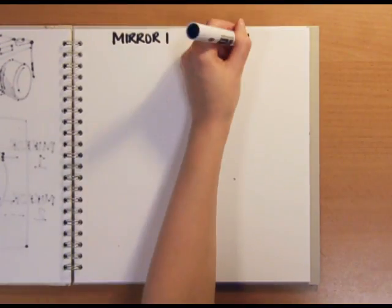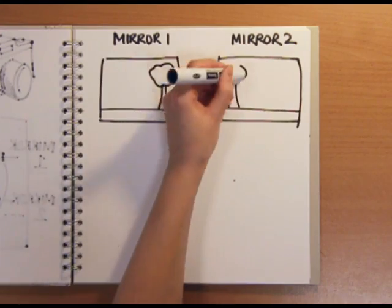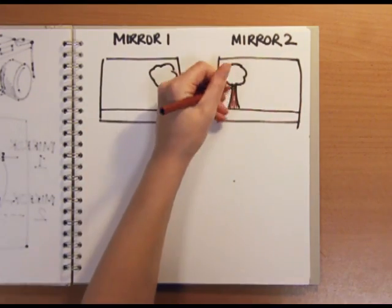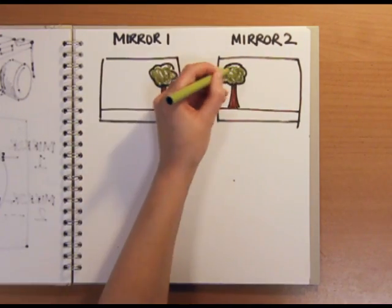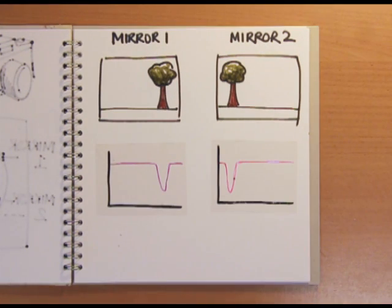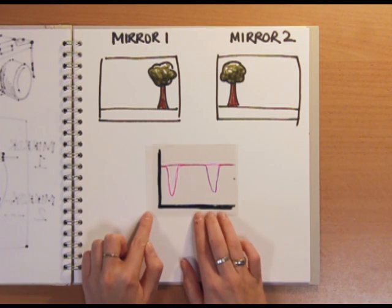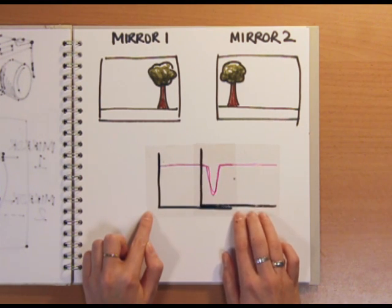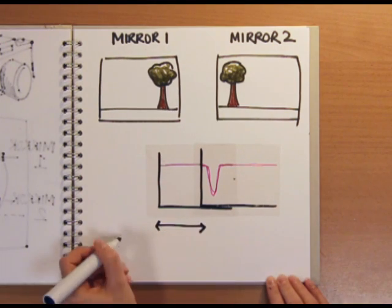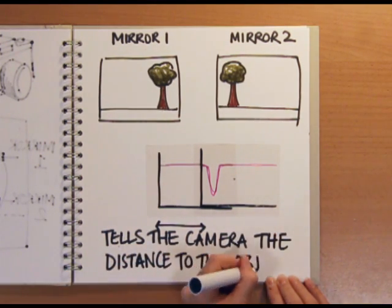Most modern autofocusing SLR cameras use this principle, but instead of moving the mirrors manually, they use two electronic sensors to look at the views from the two mirrors. A computer chip inside the camera then takes the two images from the sensors and compares the pattern of light and dark to find where they overlap and therefore the distance of the object. The computer then tells the focus ring to turn to the right distance, focusing on the object.